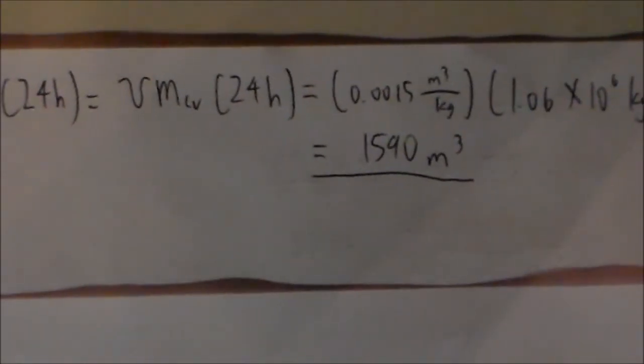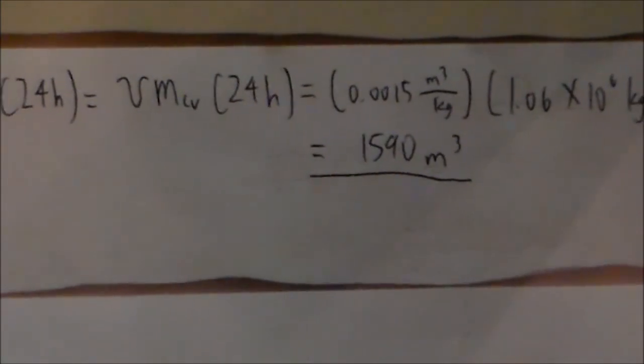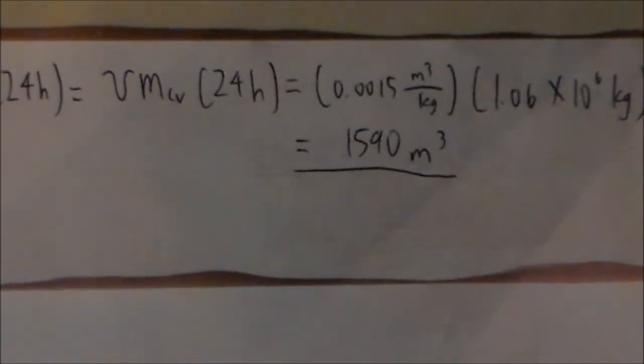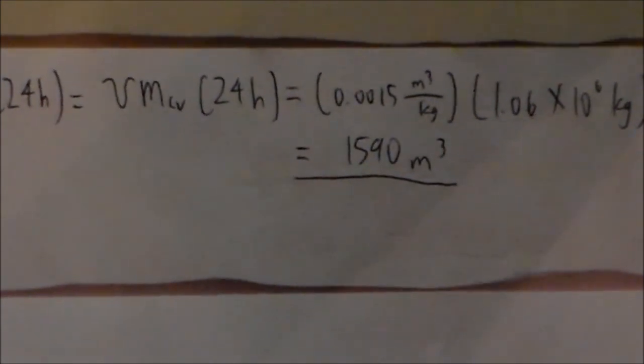The volume after 24 hours is equal to the mass at 24 hours divided by the specific volume. After performing the calculations, you would get 1,590 meters cubed.